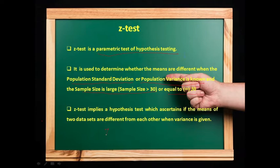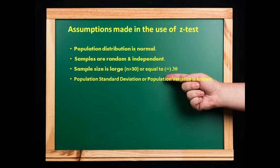Z test is applied when the sample size is 30 or more, or when the population standard deviation or population variance is known. It is a hypothesis test that tells us whether there is a difference in means between two data sets when variance or population standard deviation is given. Assumptions for Z test: population distribution is normal, samples are random and independent, sample size is large (≥30), and population standard deviation or population variance is known.